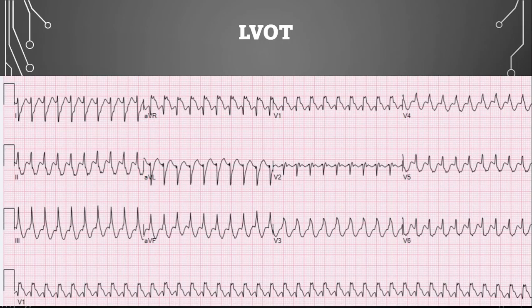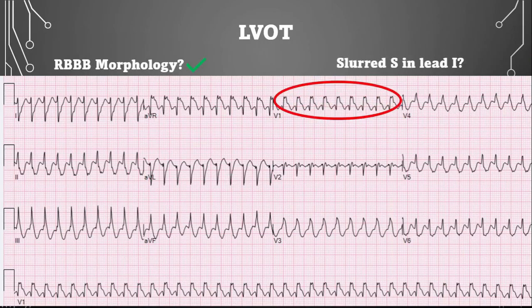Now back to LVOT. Do we see a right bundle branch morphology? Yes. And is there a slurred S-wave in lead 1? If you look at it, there is slurring of the S-wave in lead 1. So yes, this is left ventricular outflow tract tachycardia.